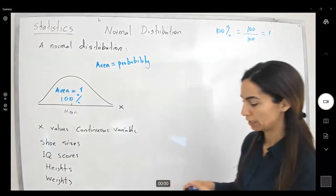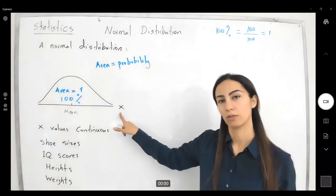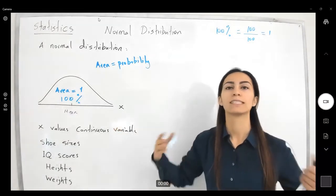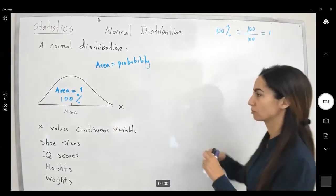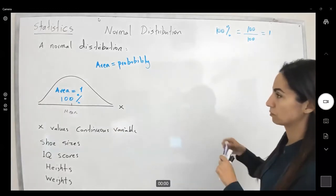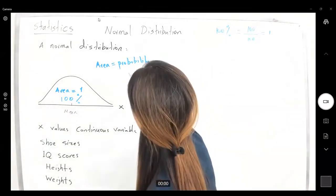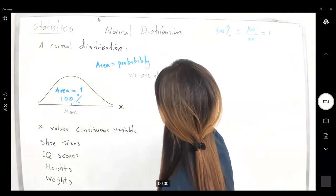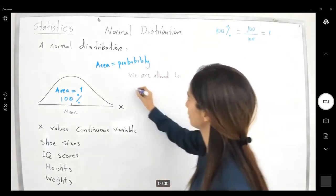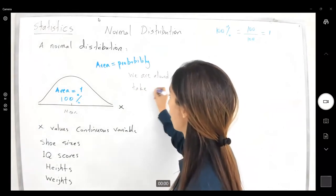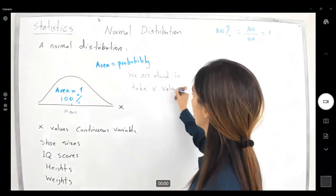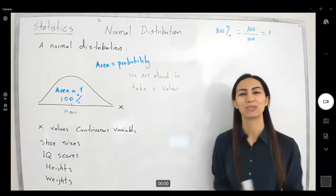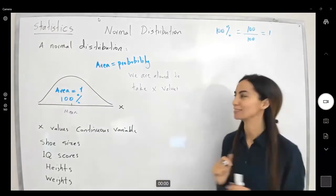One way is to take an x value and convert it into a z score. We are allowed to take confidential x values and convert them into something new that we call a z value.